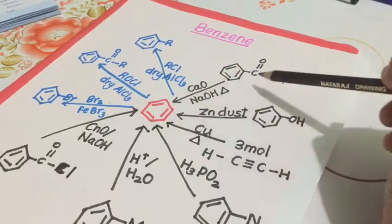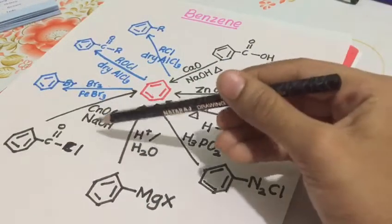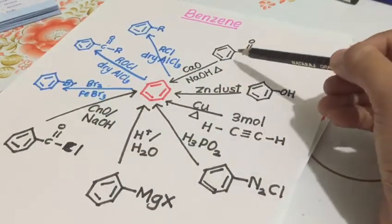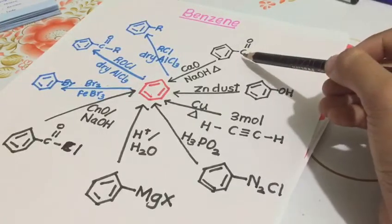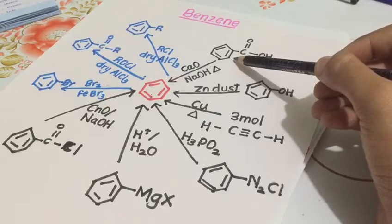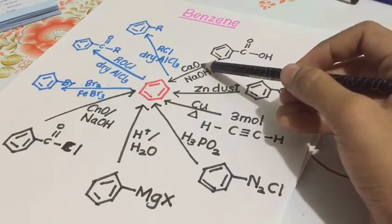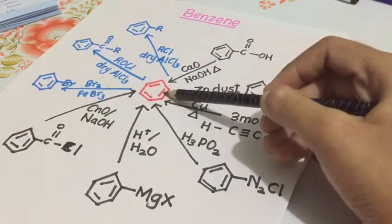Benzene can be formed from these groups: a benzene ring with a carboxylic acid. With CaO, NaOH, and heated, gives a benzene ring.